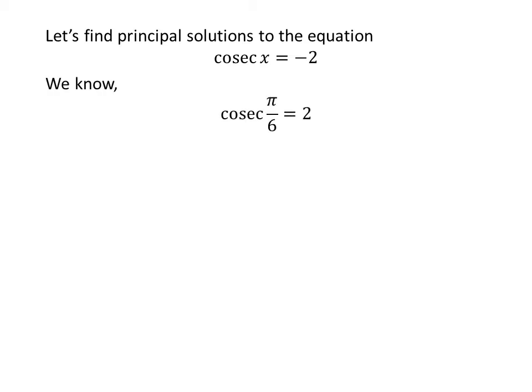We know the value of cosecant of pi upon 6 is 2. We also know the famous trigonometry identity: cosecant of pi plus a is equal to minus cosecant of a.